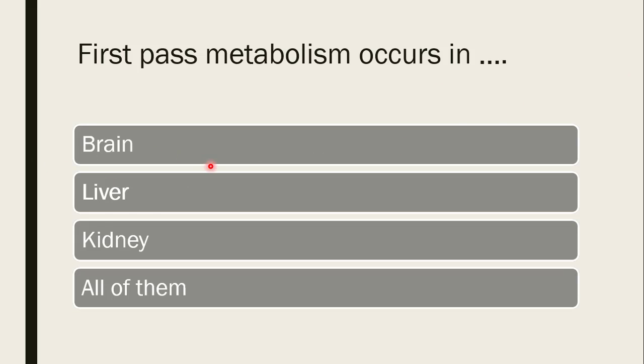Next question: first-pass metabolism occurs in — brain, liver, kidney, or all of them? The correct answer is liver.